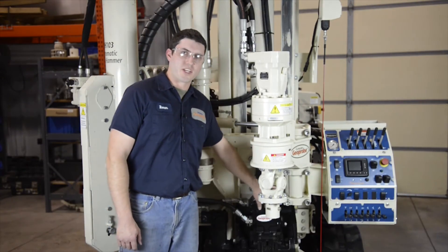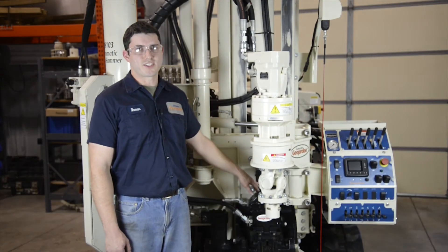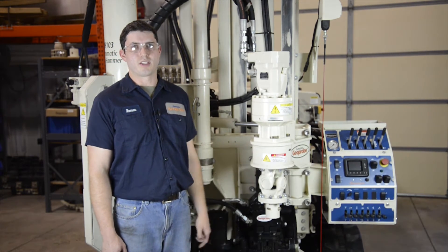Repeat the same procedure for the side accumulator on this hammer. Keep in mind that the side accumulator requires a different pressure. If you have a GH70 or 80 series hammer, the procedure is the same, but keep in mind that those also require a different pressure.